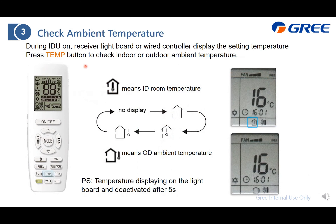To check the room temperature and the outdoor ambient temperature, press the temp button. The first press shows the room temperature and the next shows the outdoor ambient temperature. The value will display on the screen. Press again to change between them.